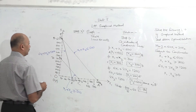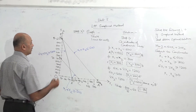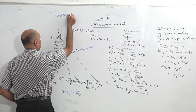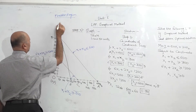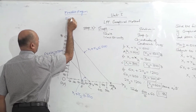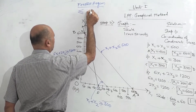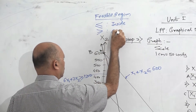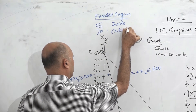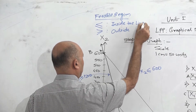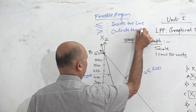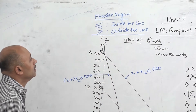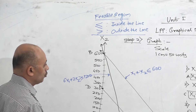Now we apply the rule for the feasible region. The rule is: if the constraint is less than or equal to, the region is inside the line. If the constraint is greater than or equal to, the region is outside the line. We should always follow this principle.